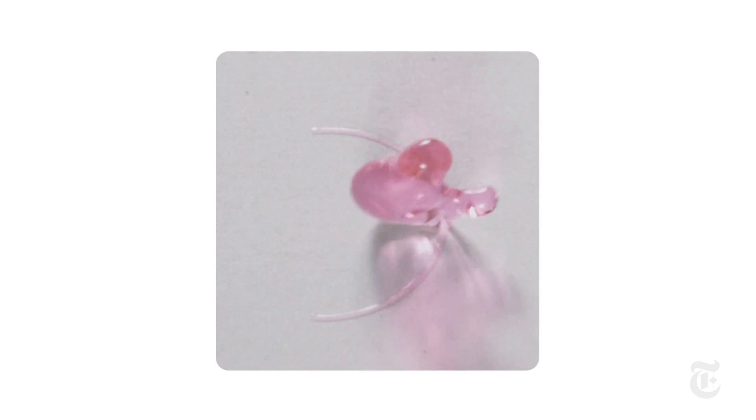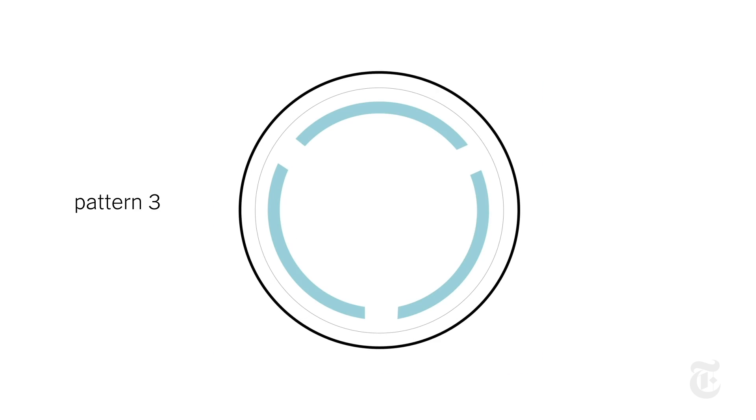The researchers made swirls and half moons and dotted circles, each of which caused the water to behave differently, sometimes even bouncing sideways.